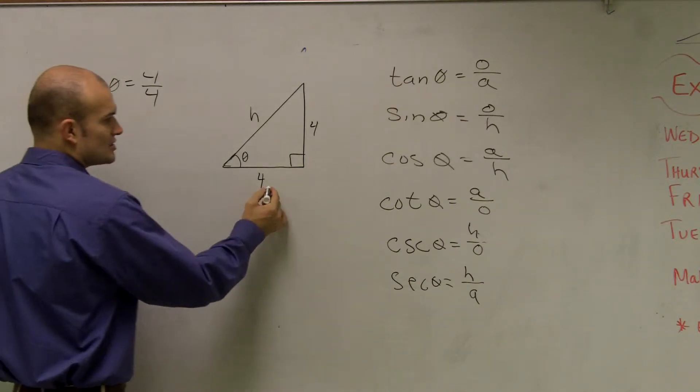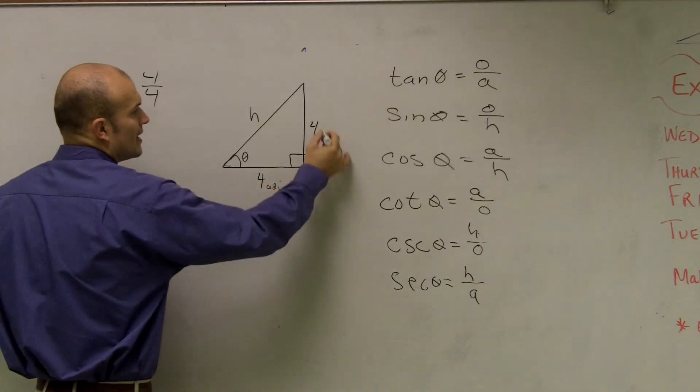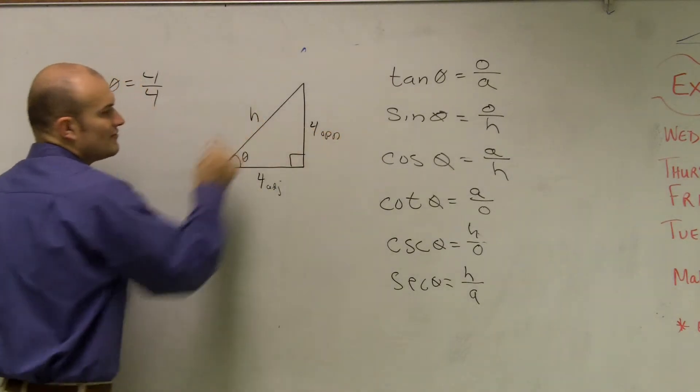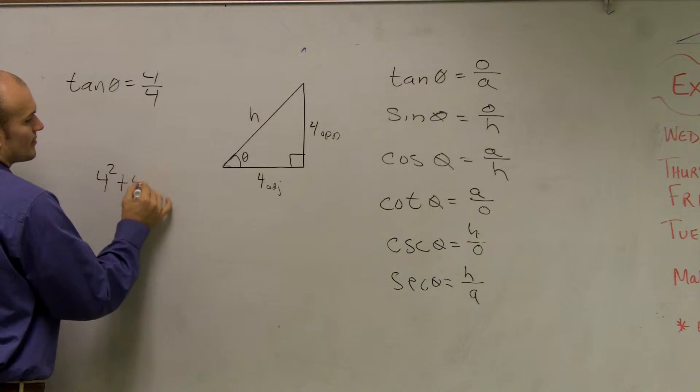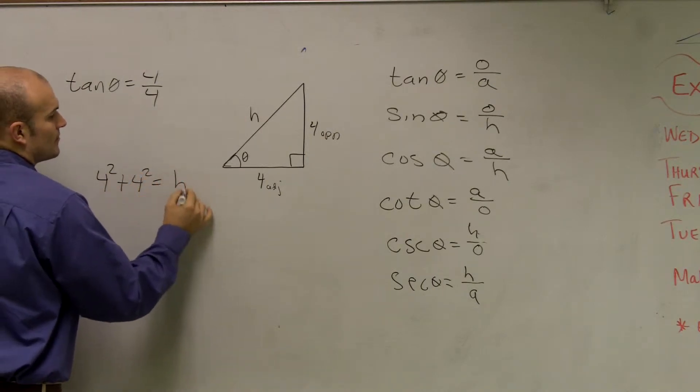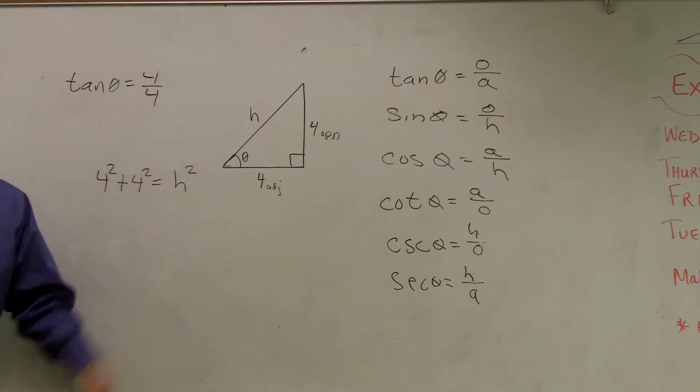So those are kind of the main important things you guys need to know. Well, if we know that here's our adjacent side, and here's our opposite side, we need to figure out what our hypotenuse is. So I'm going to use the Pythagorean theorem to find out what h is going to be.